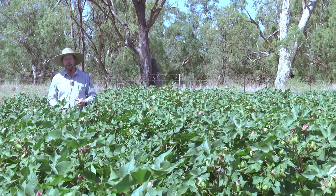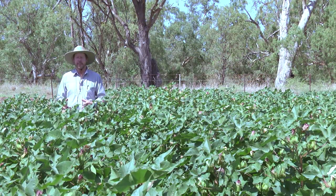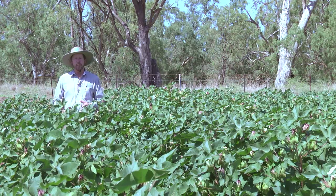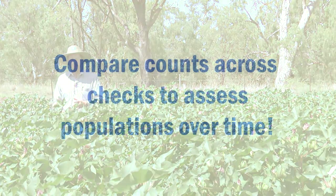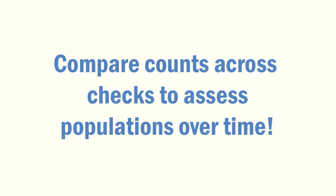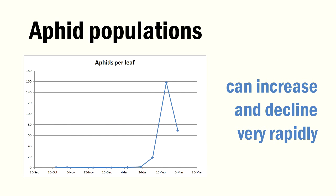A critical feature of managing aphids is to know what the population is doing. You really need to be able to track the population over time because that'll tell you if the beneficial complex is having an impact.